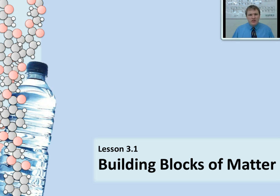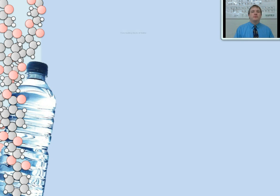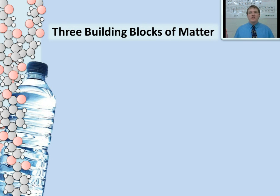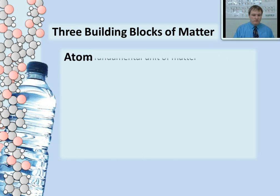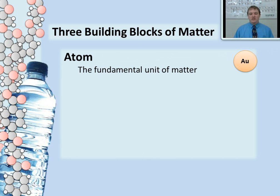Even though there are eight different categories that all matter in the universe can be put into, there are not that many building blocks. In fact, there are only three building blocks that you need to understand in order to make sense of the different types of matter. Those three building blocks are words that have been used in the previous units and are probably familiar to you, but now we're going to take those words and understand what they mean in a scientific way. The first word, one that we've used from the beginning, is the word atom.